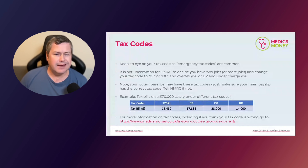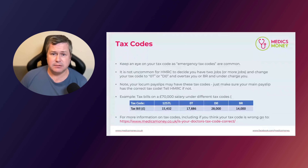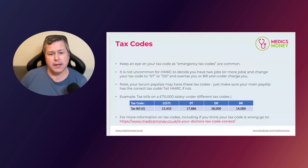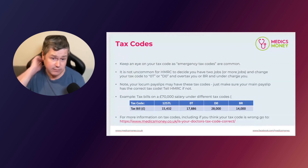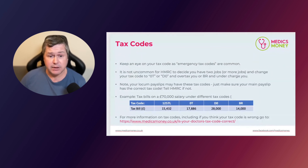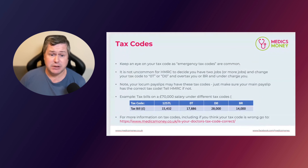If you think your tax code is wrong, check the MedicsMoney blog about what to do to get your tax code changed. You can call HMRC directly to discuss and change it — this works if you can get hold of them — or you can use your personal tax account online. The website at medicsmoney.co.uk shows you how to do this.